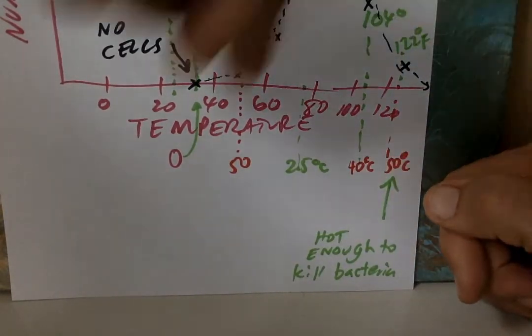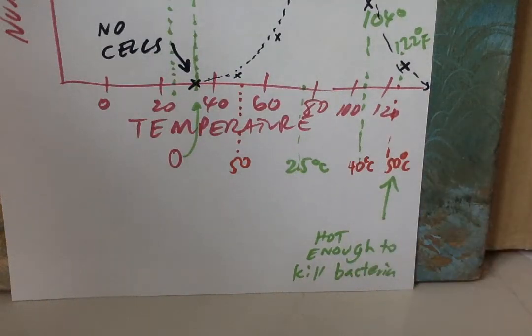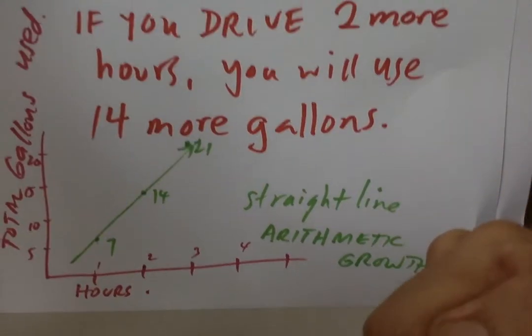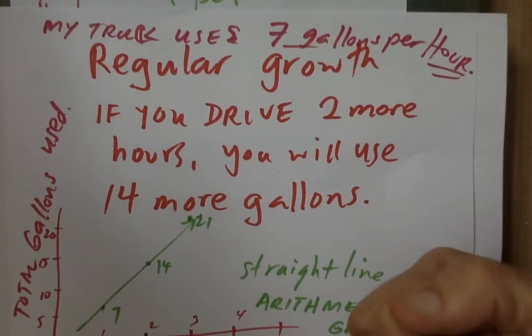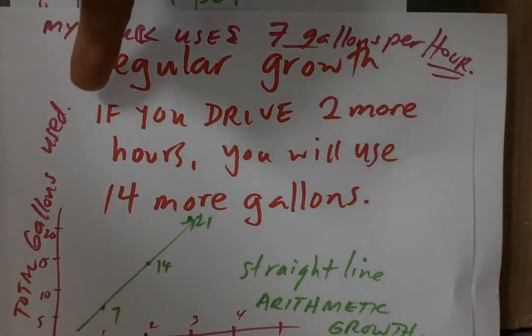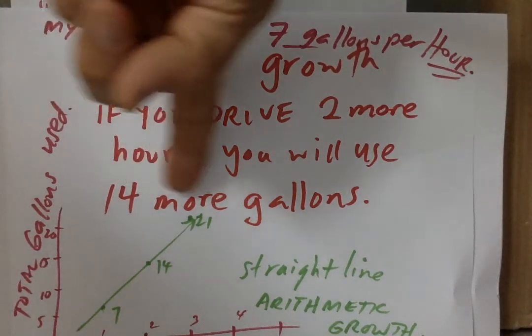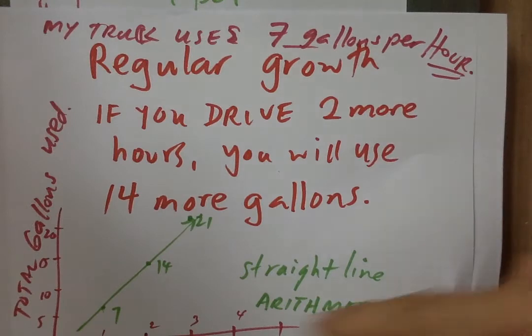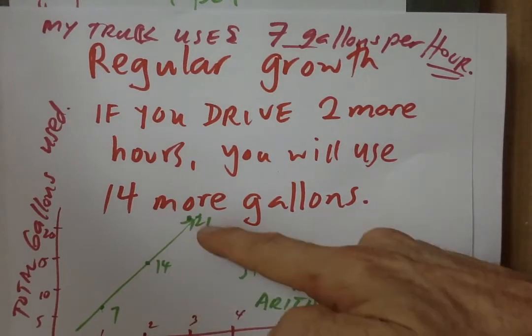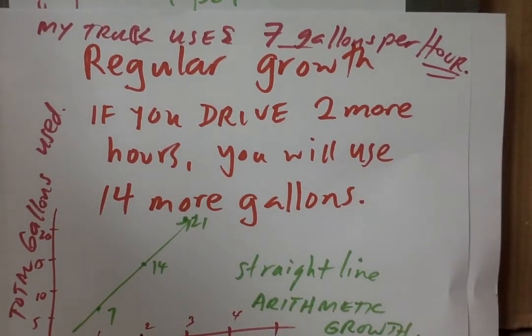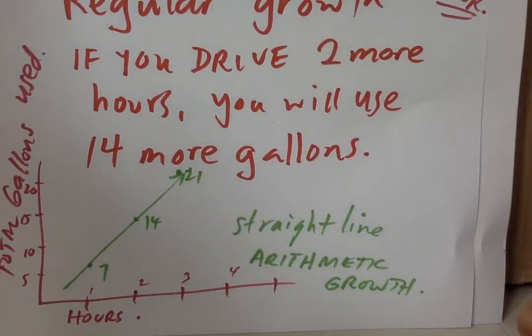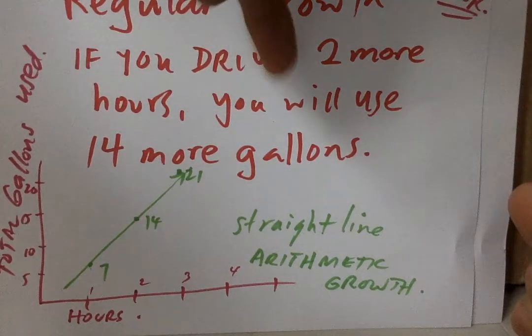These rates of growth, it's not the same as adding something. This is adding, the other one was multiplying. My truck uses 7 gallons per hour, and that's regular growth. If you drive 2 more hours, you're going to do 14 more gallons. So one hour, 7, another hour, that's a total of 14, and then you add another 7, 21. So that's straight line, arithmetic growth. It's growing, but at a constant rate.